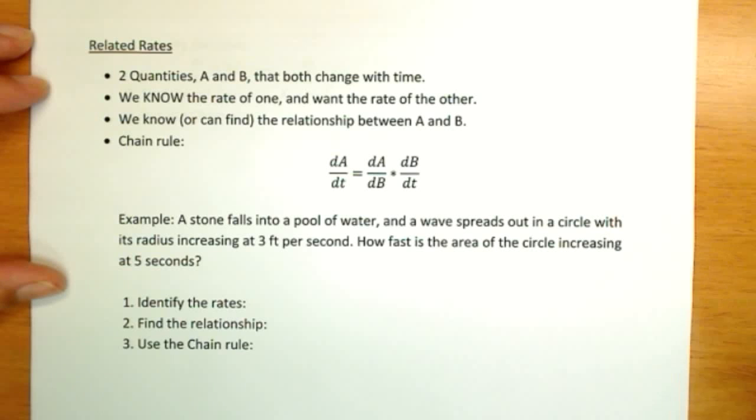So rates are things that are changing. And if we look through this problem, it's very easy to find two. And there's always going to be two, that's why they're related. One is given and one is the one you're asked to find.